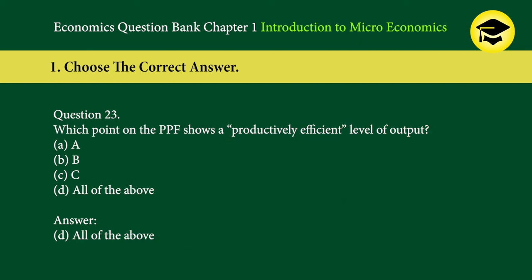Question 23: Which point on the PPF shows a productively efficient level of output? A. A, B. B, C. C, D. All of the above. Answer: D. All of the above.